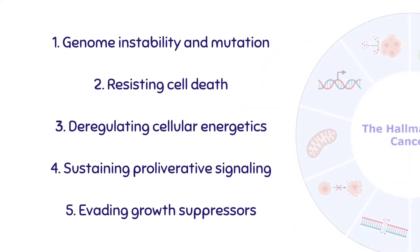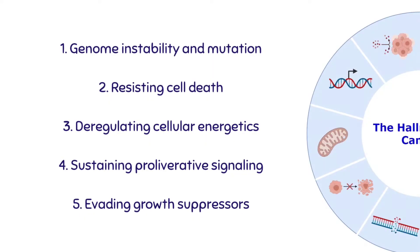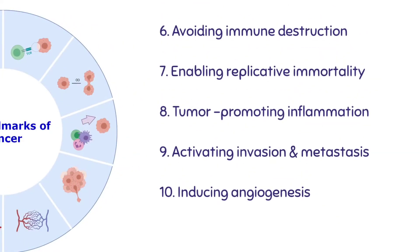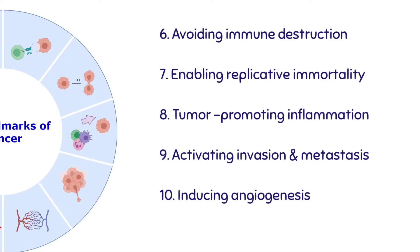All tumor cells show the 10 hallmarks of cancer. These characteristics are required to produce a malignant tumor. They include: genome instability and mutation, resisting cell death, deregulating cellular energetics, sustaining proliferative signaling, evading growth suppressors, avoiding immune destruction, enabling replicative immortality, tumor-promoting inflammation, invasion and metastasis, and inducing angiogenesis.